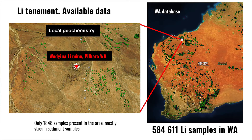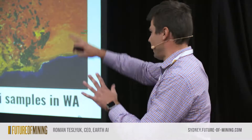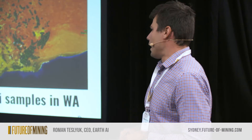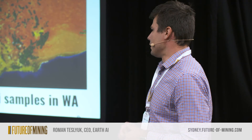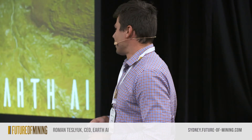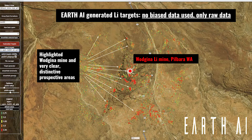The Wodgina lithium example in the Pilbara: in the public domain you have only 1,800 samples — mainly old stream sediment data — but across all of WA you have 600,000 samples you can train on, just based on geochemical data. In that area, with our previous calculation, you can fit 26,000 fully exposed ore bodies. Our predictions show the red points which locations have the most similar data signature to high-lithium samples across WA.